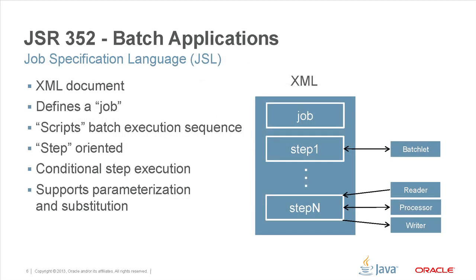Let's next take a look at the job specification language, or JSL. JSL is an XML document that defines a job. A job is a batch concept that gives us a unit of work for processing. Jobs are given to the system to process; they execute asynchronously. Once they're done, results are available from the job. JSL scripts the batch execution sequence.